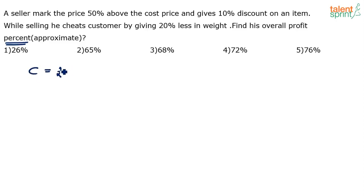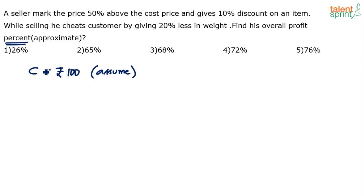We do not know if the cost price is 100 or not. Cost price can be taken as 110, 132, or 97. You can assume any value, but it's easy to start with 100. It will not impact the final answer because the final answer is in terms of percentage. So let's assume the cost price is 100 rupees per kg.